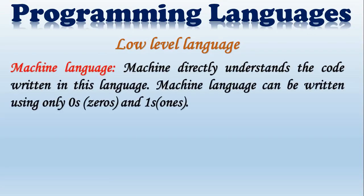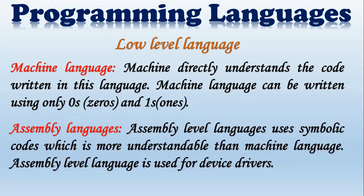Let us see what low level language is. First, machine language — the machine directly understands code written in this language, and machine language can be written using only zeros and ones. Assembly level language uses symbolic codes which are more understandable than machine language, and assembly level language is used for device drivers.